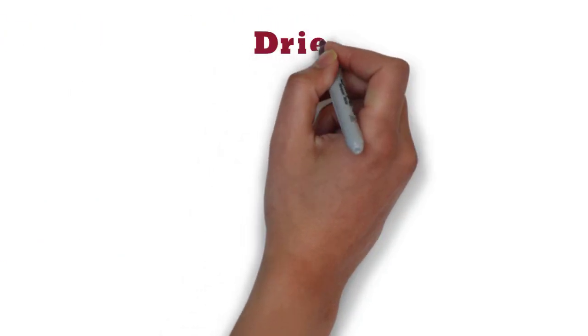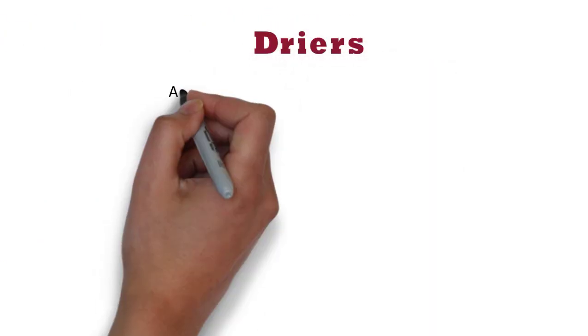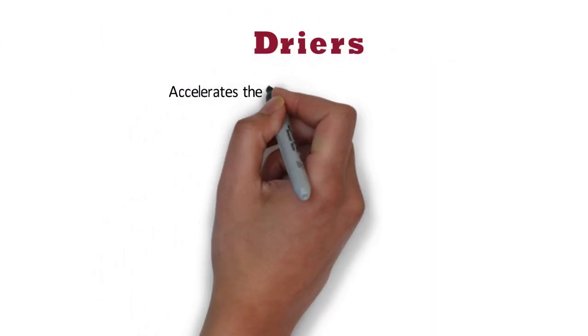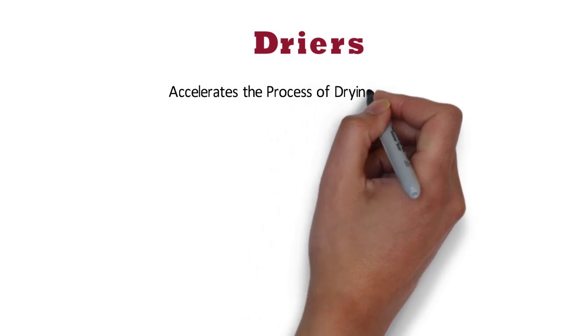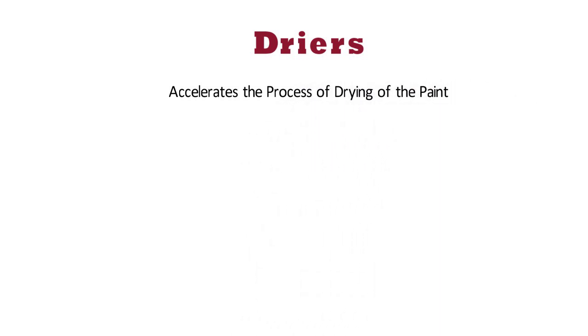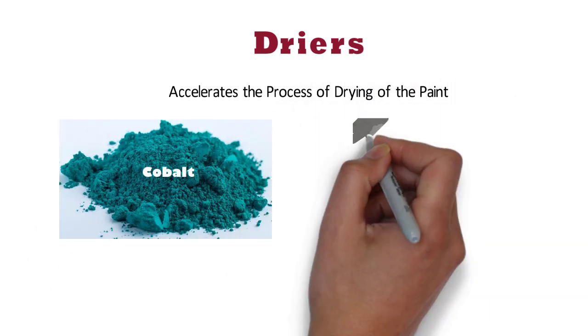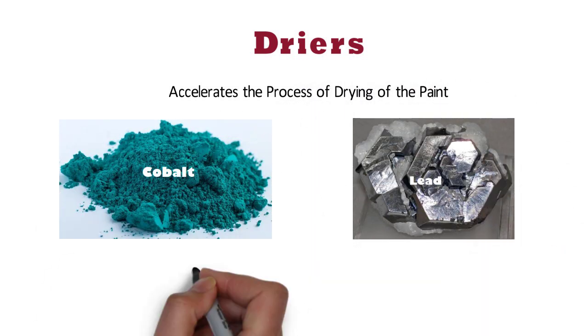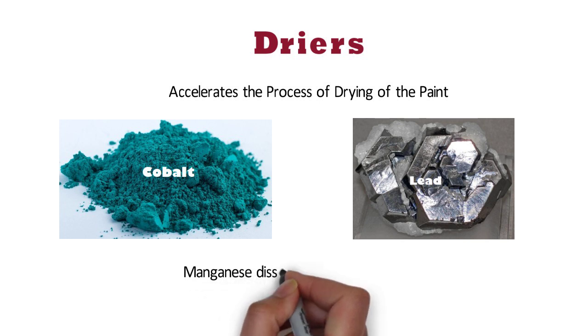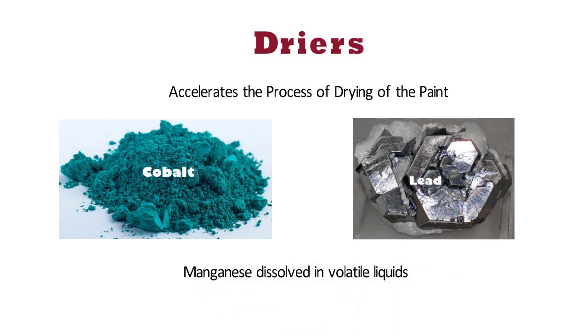The fifth component is dryers. Dryers accelerate the process of drying of the paint. Substances like cobalt, lead, and manganese dissolved in volatile liquids are used as dryers.